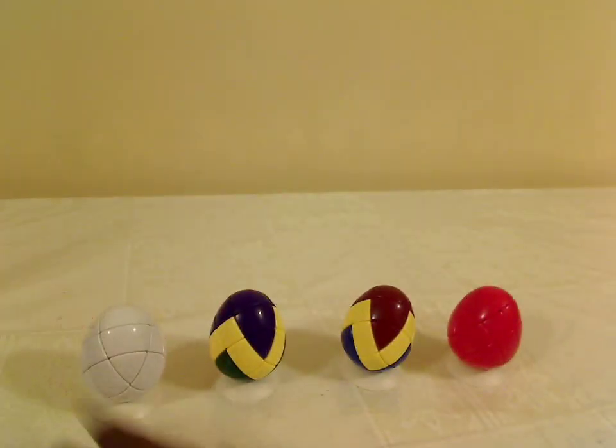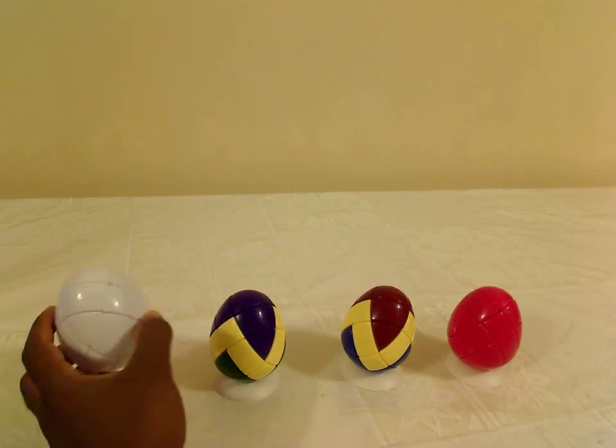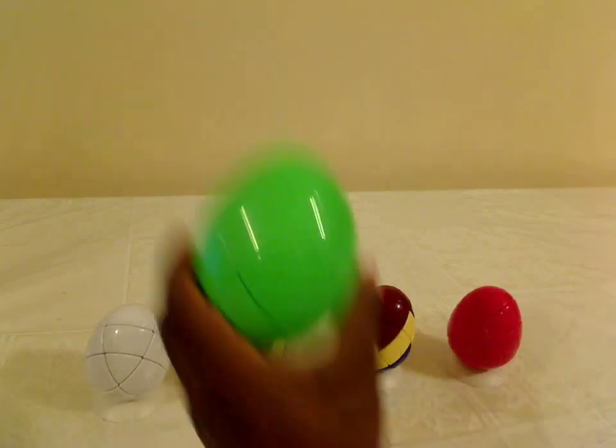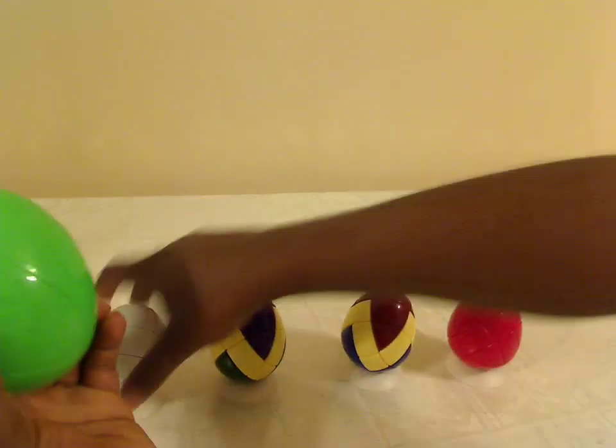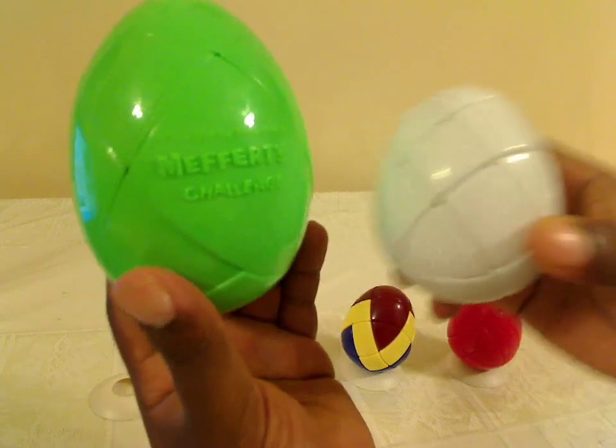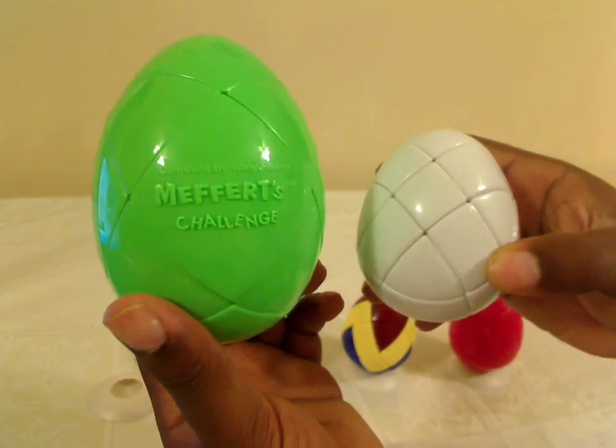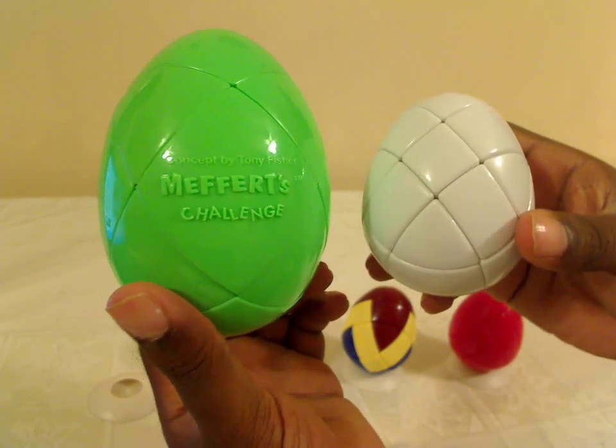Now let me do a quick size comparison. There's a similarly shaped puzzle that got released from Mefferts a couple of months ago called Tony Fisher's Golden Egg, and this is one of them. Now, as you can see, the Tony Fisher's Golden Egg is a lot bigger. It's almost twice as big as the Morph Egg.